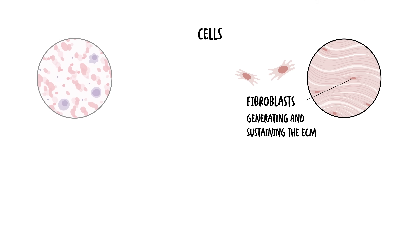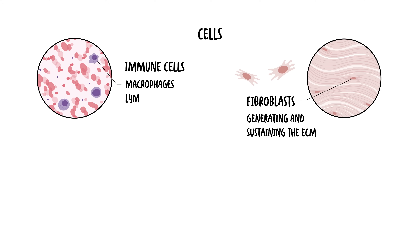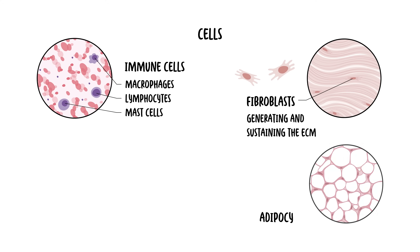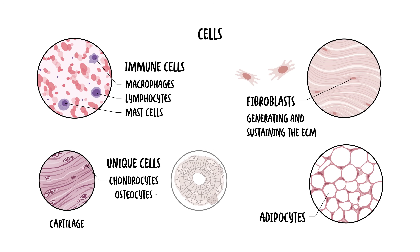Other cell types found in this area include immune cells like macrophages, lymphocytes, and mast cells, and adipocytes, which are your fat cells. Specialized forms of connective tissue have their own unique cells, such as chondrocytes in cartilage and osteocytes in bone.